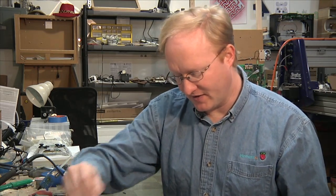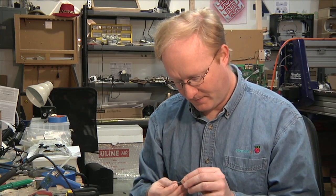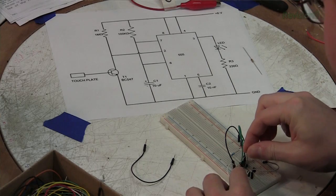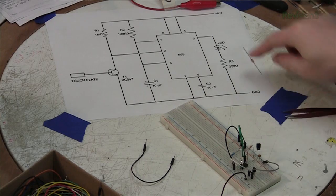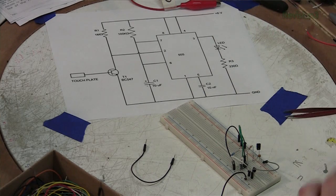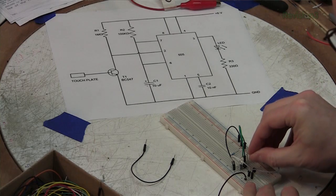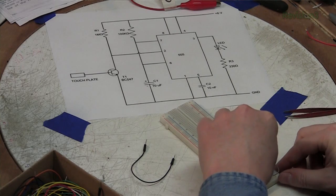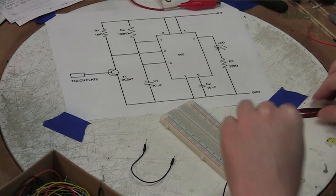Alright, now we just need our output, so pin 3 goes into the LED. And then the LED goes to a resistor to, you guessed it, ground. All things lead to ground.